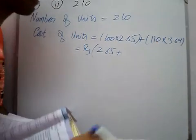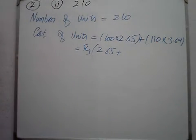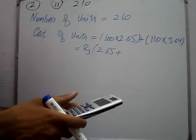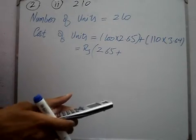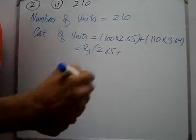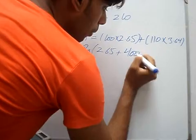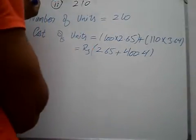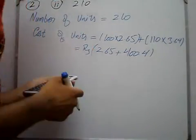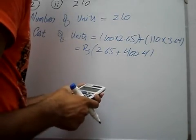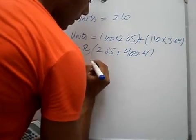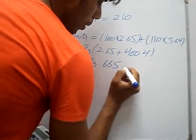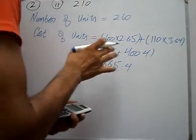110 multiply by 3.64 equals 400.4. Then plus 265, giving us total cost of units = 665.4.